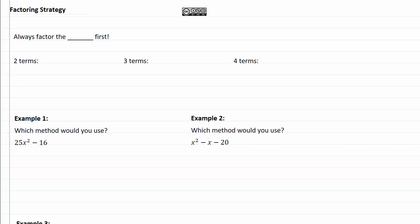So the first thing that we always want to do is factor the GCF. So you're always looking for a greatest common factor first. I'm going to start a list off to the side, so one is look for GCF.